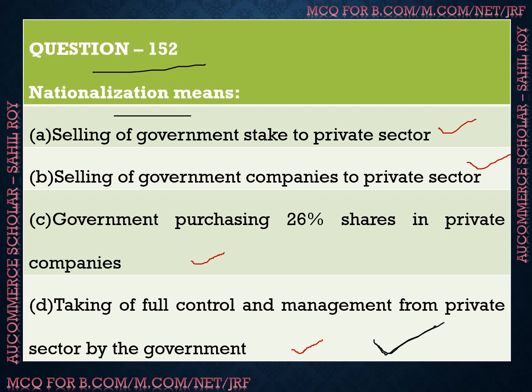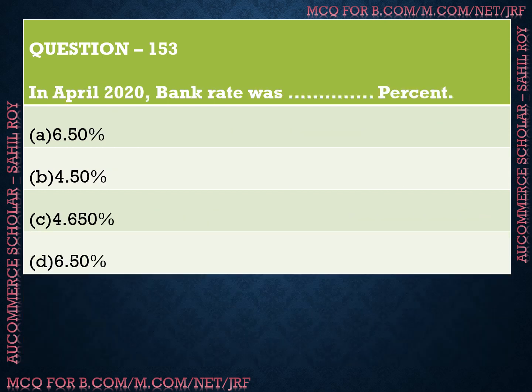Question number 153: In April 2020, the bank rate is dash percent. We have four options: Option A is 6.50%, Option B is 4.50%, Option C is 4.65%, and Option D is 6.50%. The correct answer is Option C — 4.65%. As of April 2020, the bank rate was 4.65%.